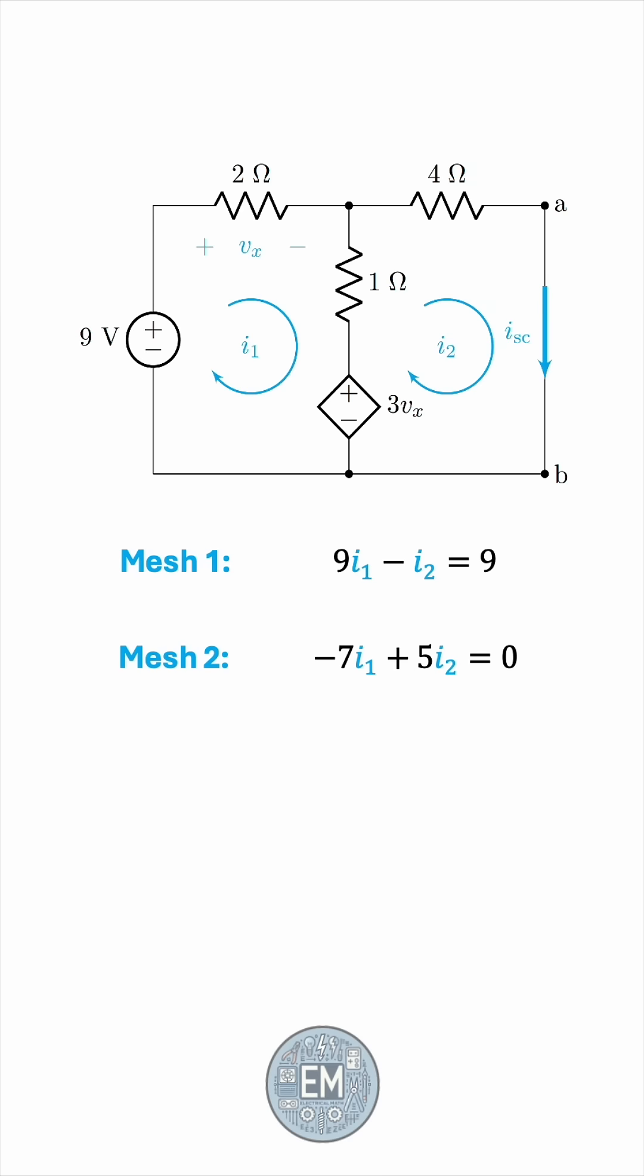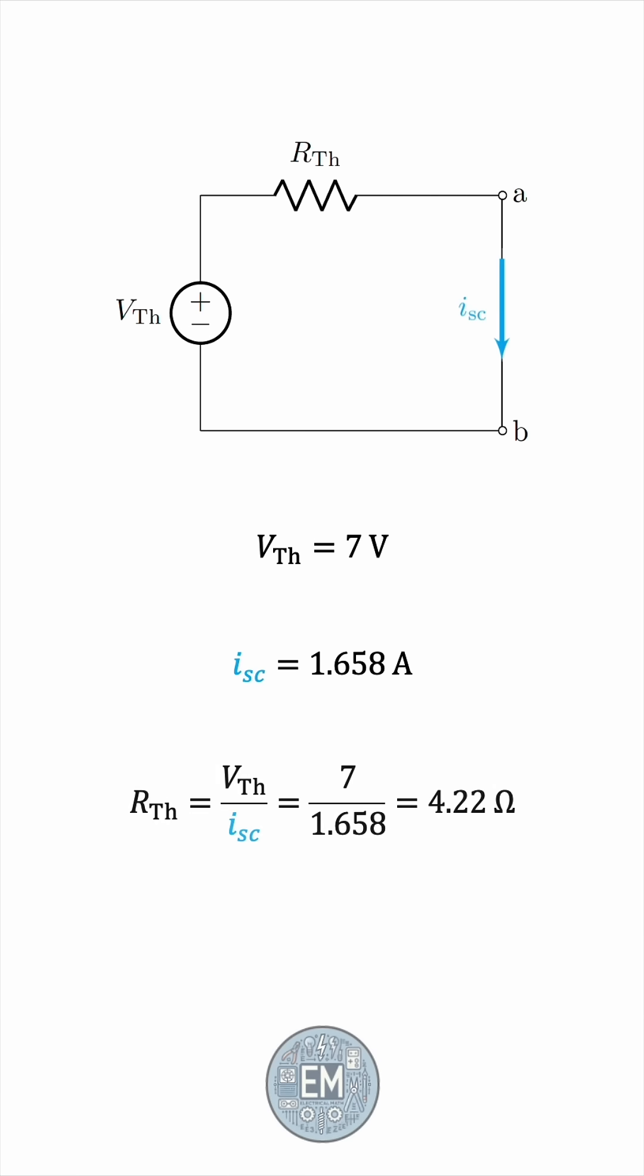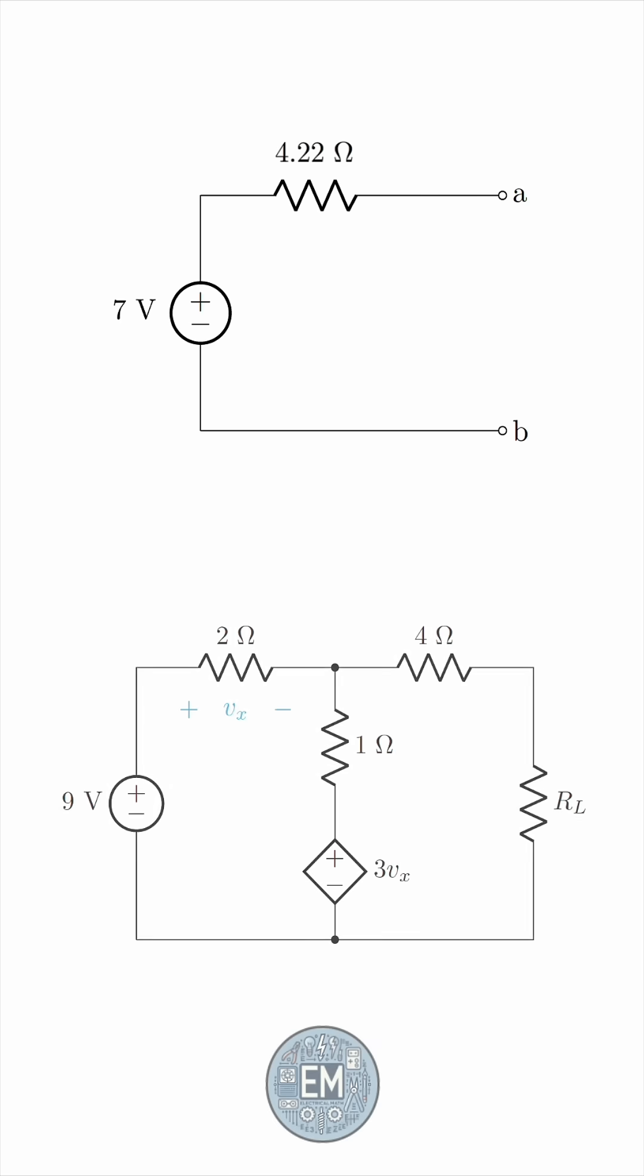We'll solve the system of equations, and I2 is the short circuit current we're after. So now, we can get R Thevenin by dividing V Thevenin by this short circuit current. The load resistance, which leads to maximum power being drawn, is this 4.22 ohms.